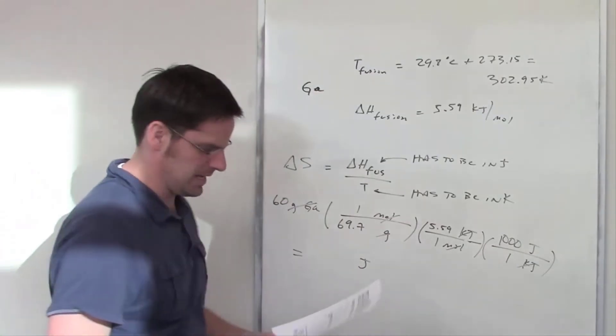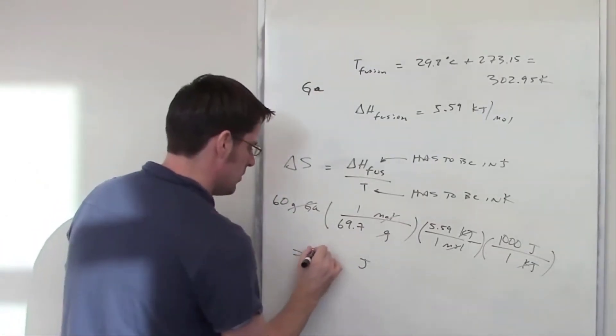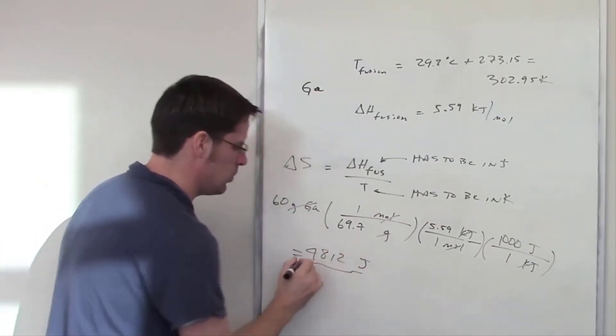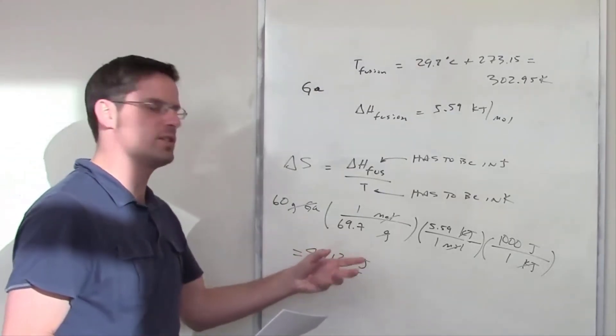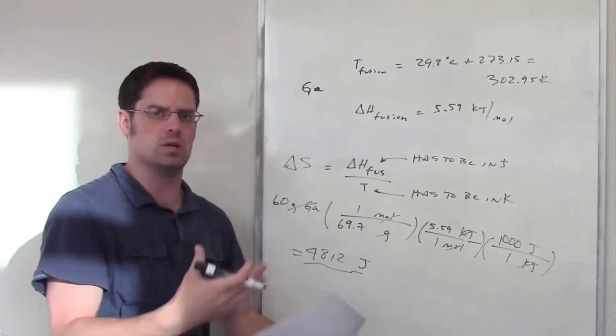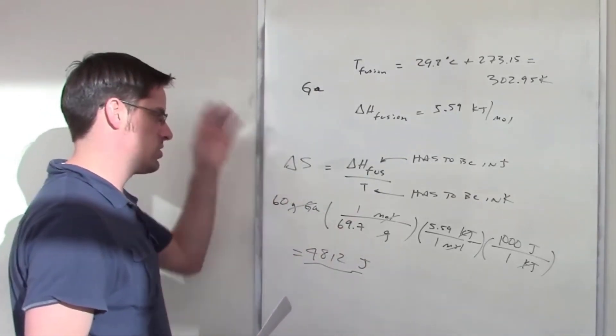I do all that plug and chug in my calculator and I end up getting 4,812 joules as the total number of joules that 60 grams of gallium would require in order to make this change.